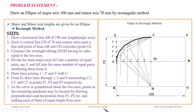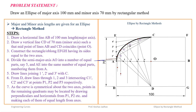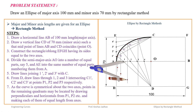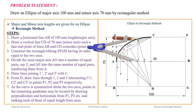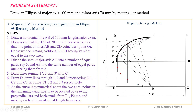Using a compass, measure the distance of point P1 above the horizontal axis and mark it on the lower side. Similarly measure the distance of P2 above the horizontal axis and mark the point on the lower side. Do the same for P3 and P4. In this way we get symmetric points and join them by a smooth curve.